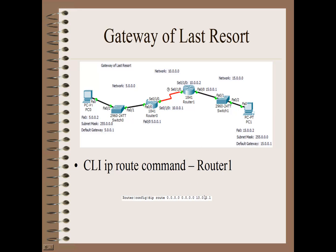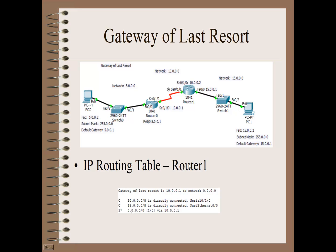On router 1, we run the same command: ip route 0.0.0.0 0.0.0.0 10.0.0.1. The port is now the first port on the router in the other direction, which is 10.0.0.1. This sets a new IP route that becomes the gateway of last resort, taking any IP traffic and moving it to that port. Router 1's routing table now shows the gateway of last resort set to 10.0.0.1, routing all traffic - network all zeros - via that static route.